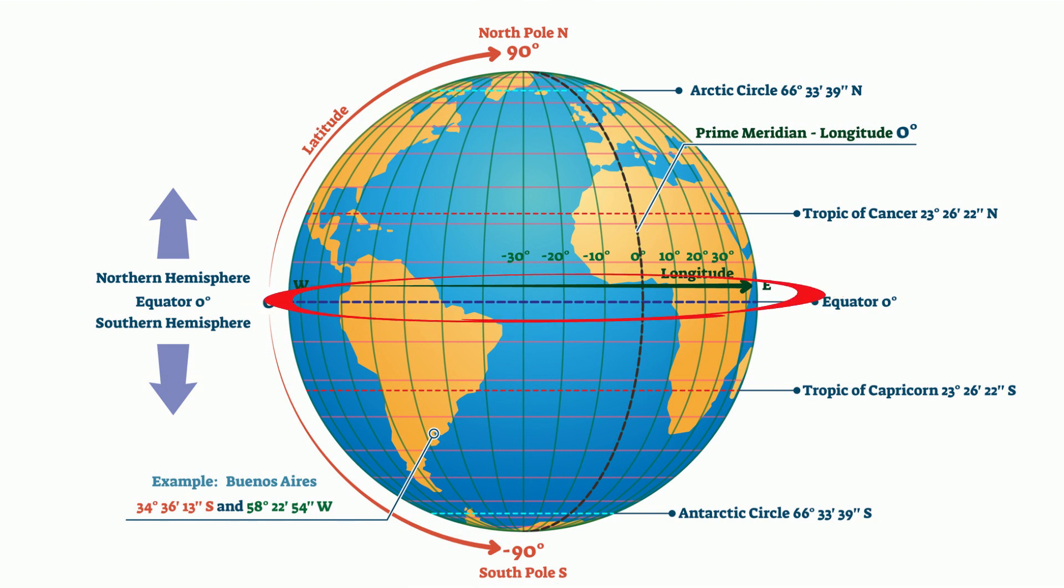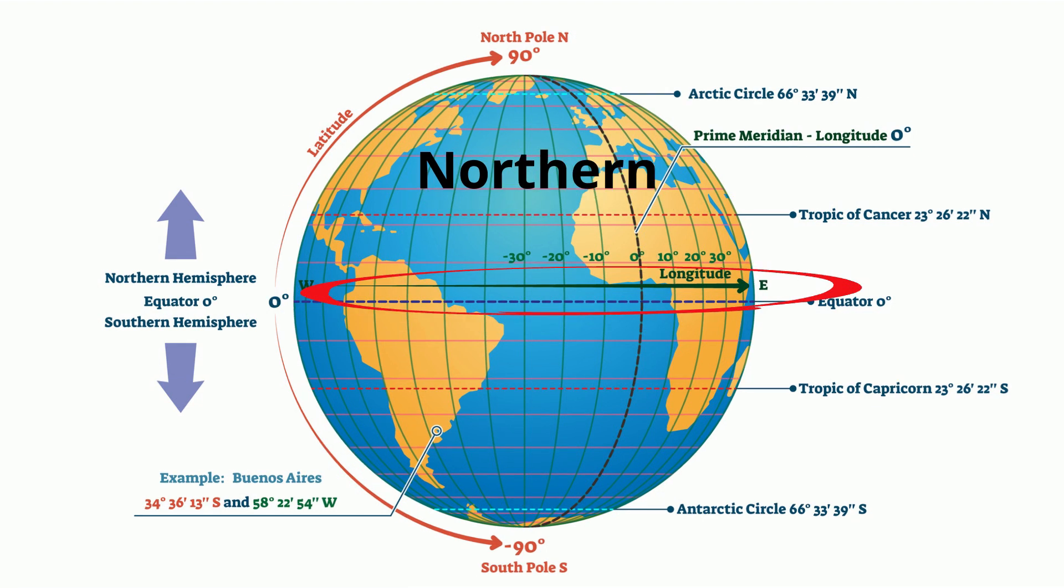The equator is found at zero degrees latitude, and any place above the equator is in the northern hemisphere, and any place below the equator is in the southern hemisphere.